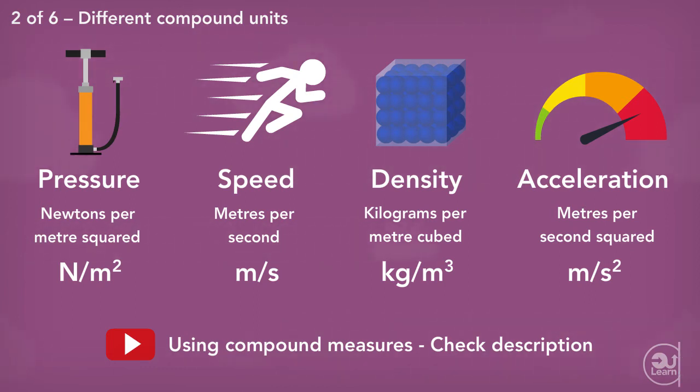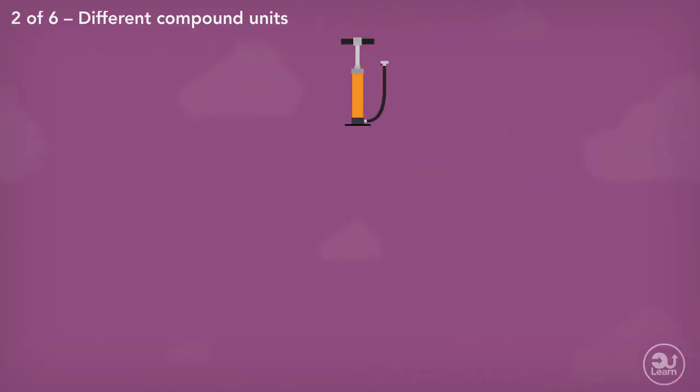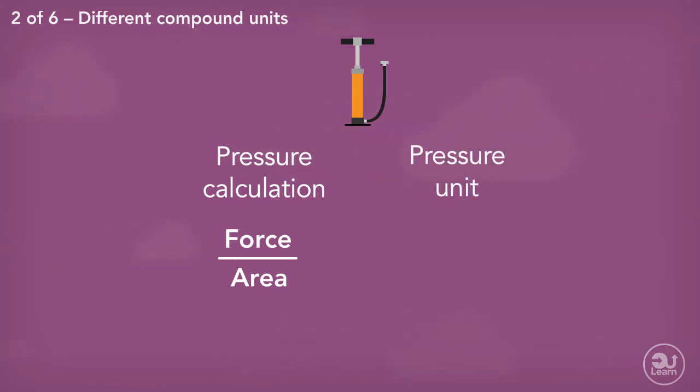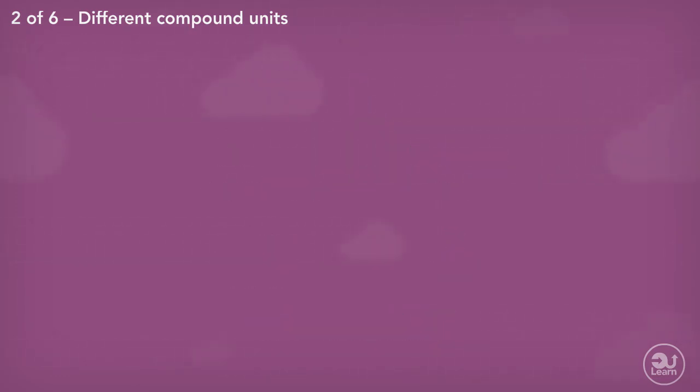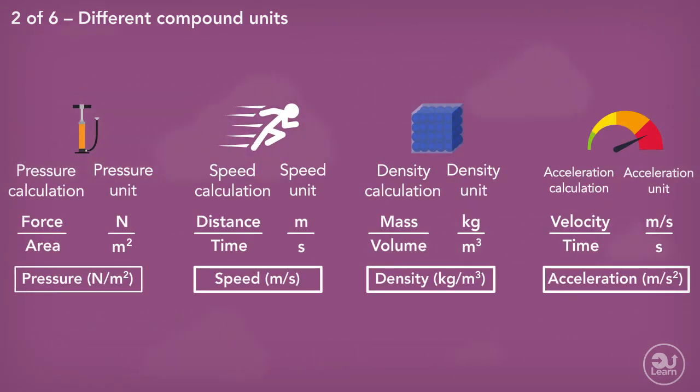These units are easily identified by using what you know about how to calculate them. Pressure is calculated by dividing force by area. Therefore, the unit for pressure is the unit for force, which is newtons, divided by the unit for area, which is meters squared. The same reasoning can be applied to the other compound measures.